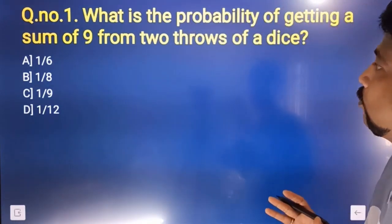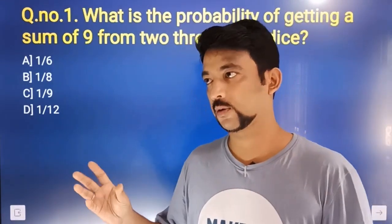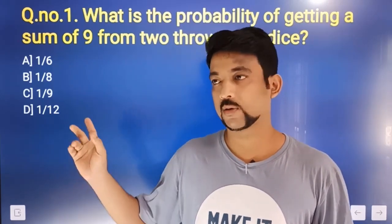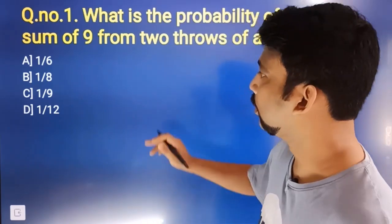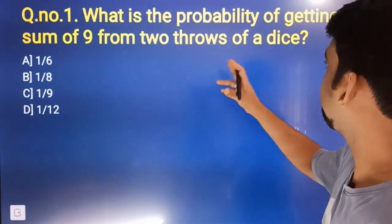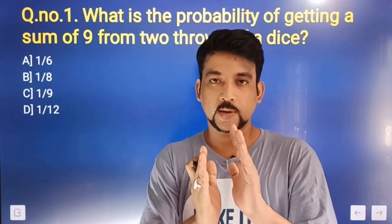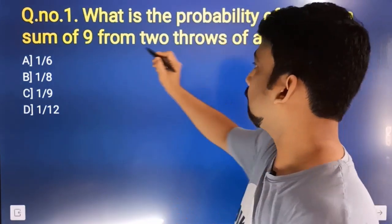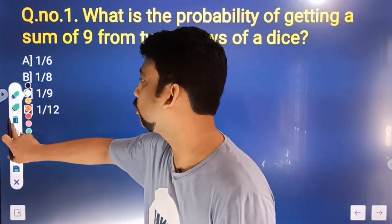What is the probability of getting a sum of 9 from two throws of a dice? The probability of getting a tail from one coin toss is 1 by 2. The probability of getting a sum of 9 from one coin toss is 1 by 2.